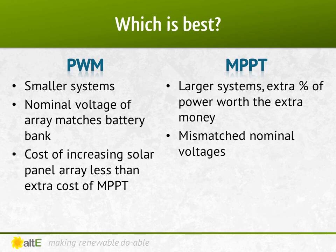So when should you use a PWM versus an MPPT charge controller? PWM works great on smaller systems where the nominal voltage of the panels matches the voltage of the battery bank. Remember that wiring panels in series increases the voltage, so if you have two 12-volt panels and a 24-volt battery system, you can wire the panels in series to make 24 volts. In most cases with a small system, the cost of increasing the panel size to get more power is less than the cost of going from PWM to MPPT. Going from a 100-watt panel to a 130-watt panel to get 30% more power will cost less than going from a PWM to an MPPT charge controller.